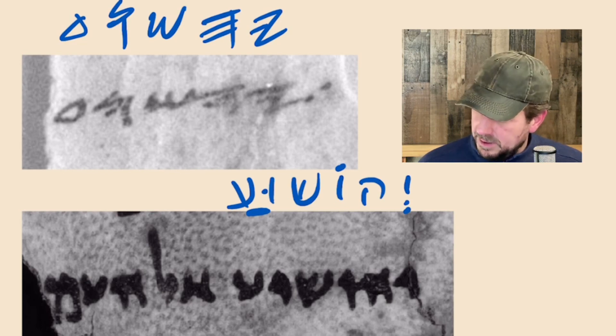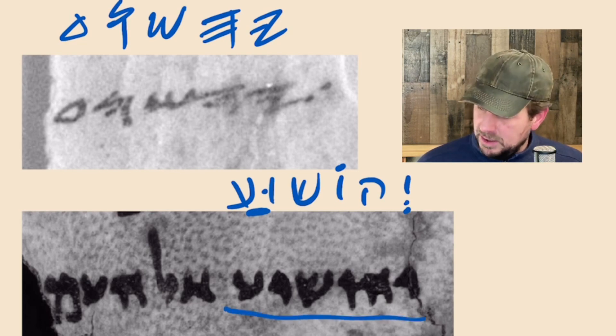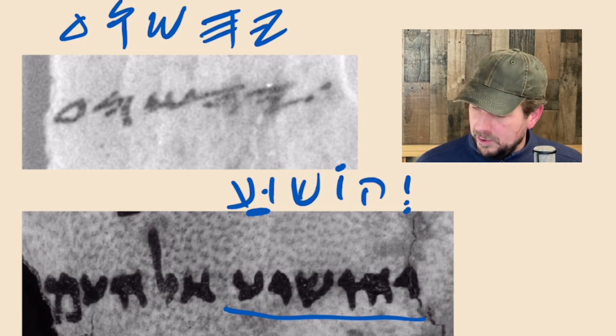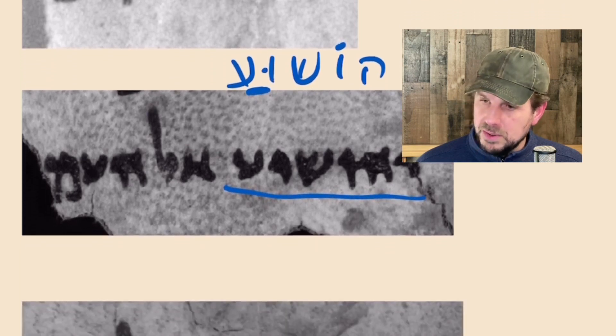Yod, He, Vav, Shin, Vav, Ayin. This is from a newer period where Aramaic script is starting to be used.